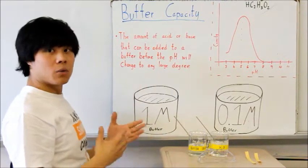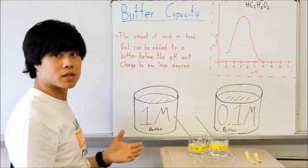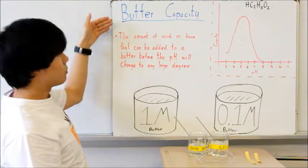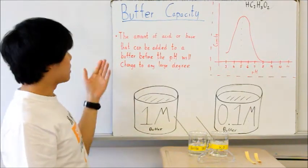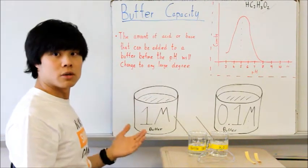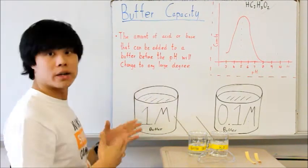Now, there is a way to determine how much acid or base a buffer can successfully neutralize. This is called buffer capacity. So, the buffer capacity states the amount of acid or base that can be added to a buffered solution before the pH will change to any large degree.